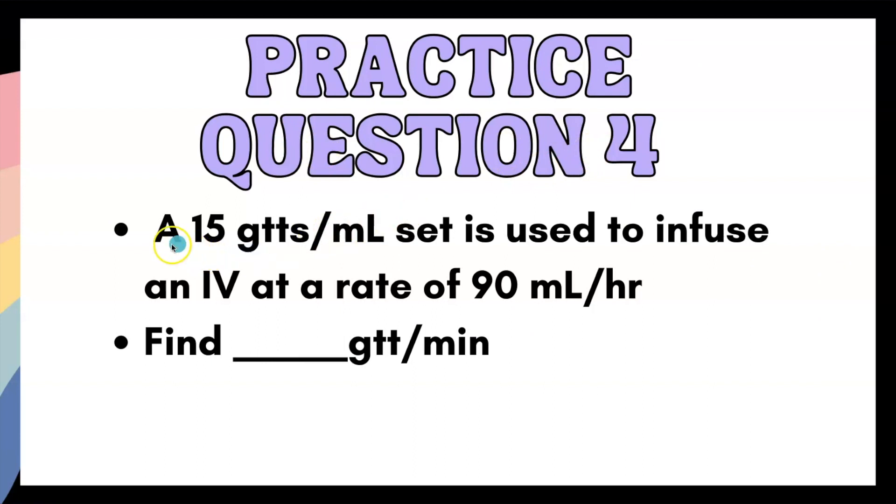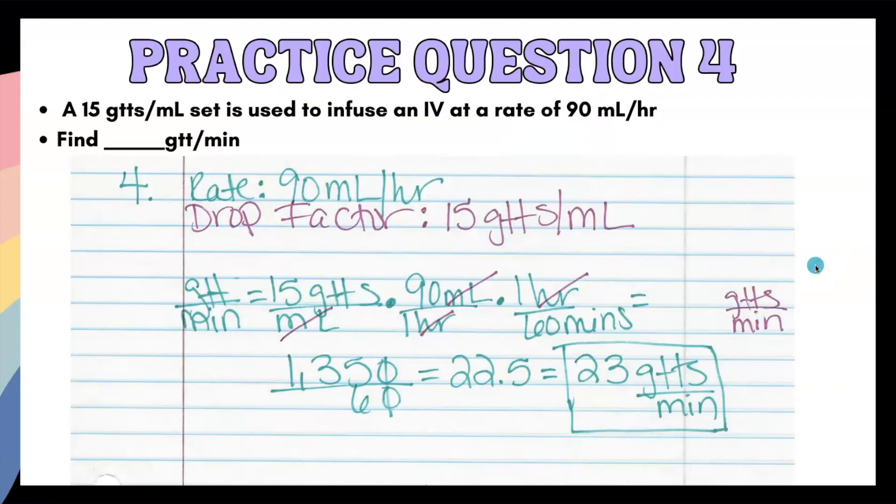Practice question four. We have a 15 drop per milliliter set is used to infuse an IV at a rate of 90 miles per hour, find drops per minute. Another trick, if you don't know what you're supposed to look for, what unit of measurement, is to look at the answer area. A lot of times they'll include like a line and then the unit of measurement. That way, even if you're completely lost, sometimes that can help you gather your thoughts.